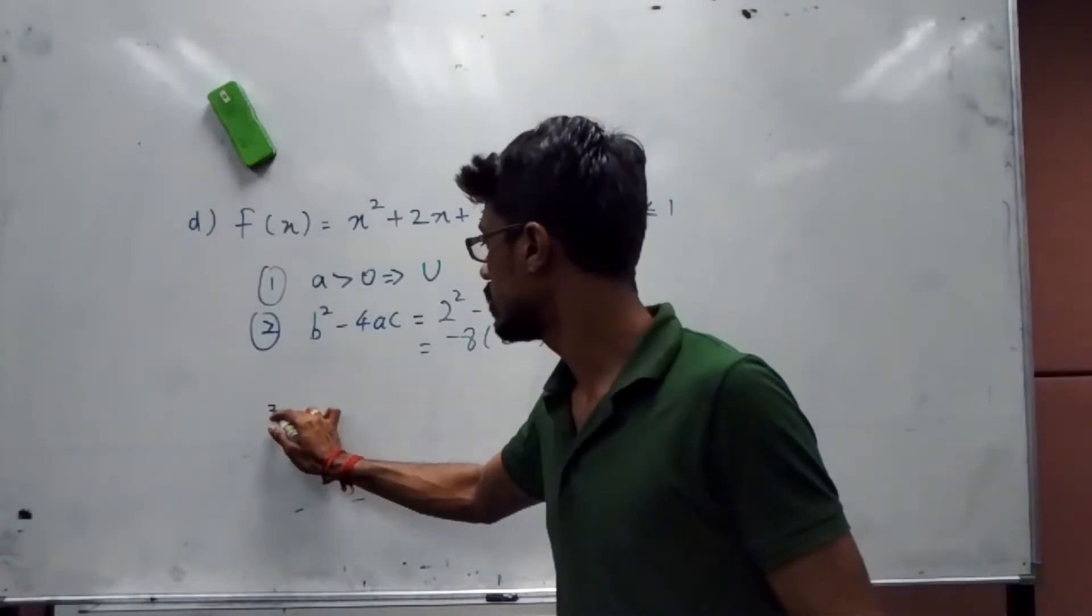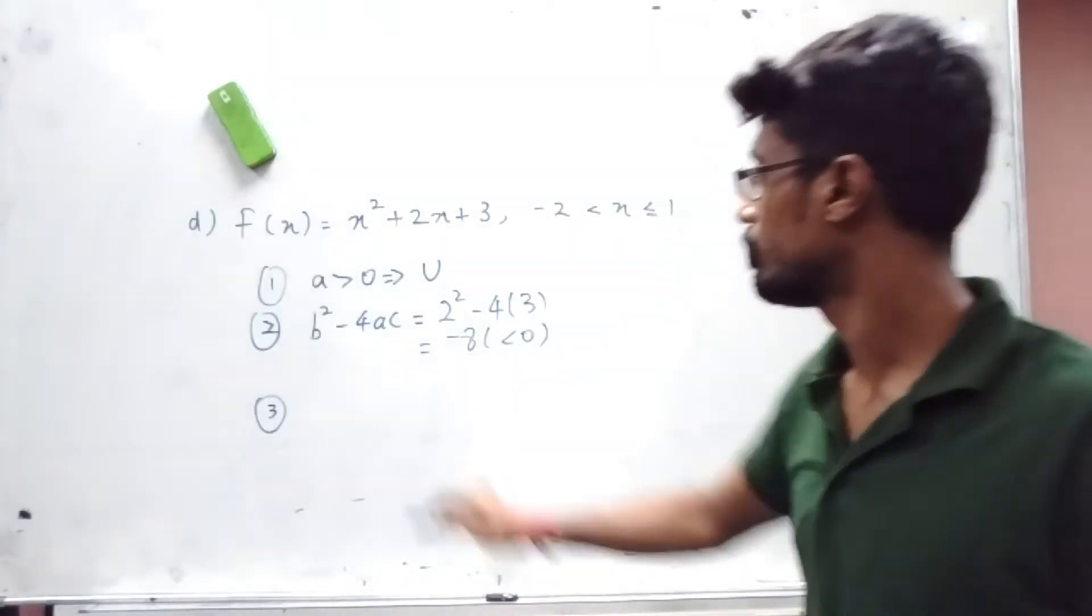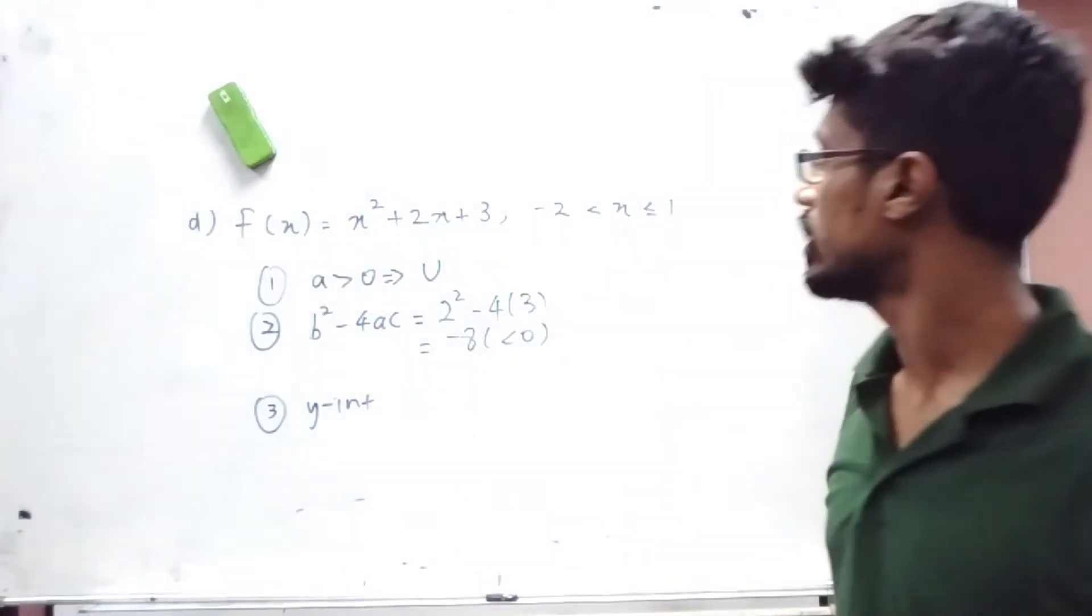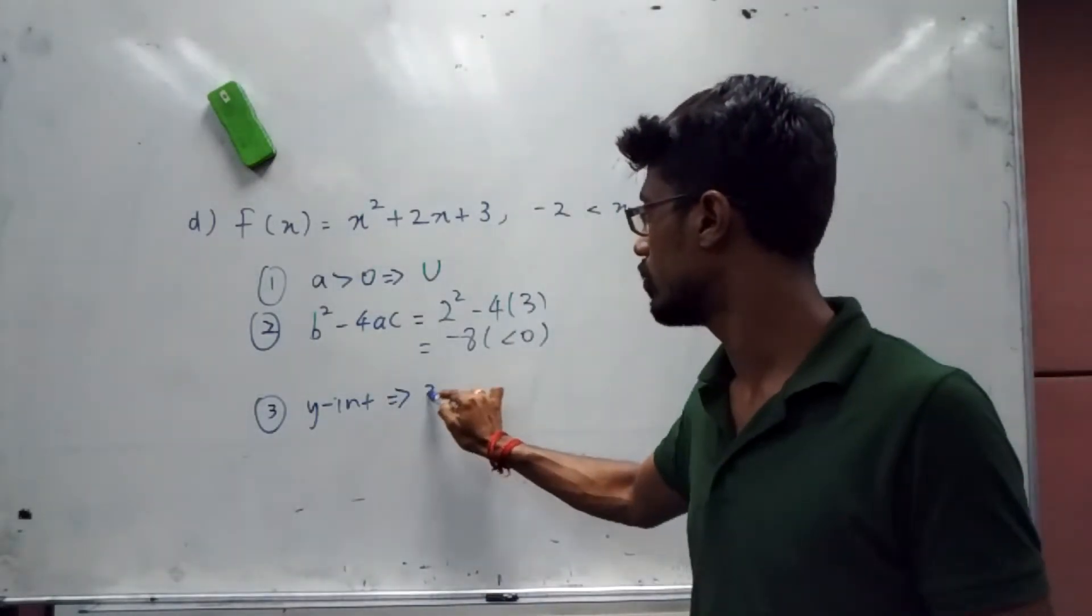Number three, we can find what is our y-intercept. Y-intercept when x equals 0, so that's going to give me value of 3.